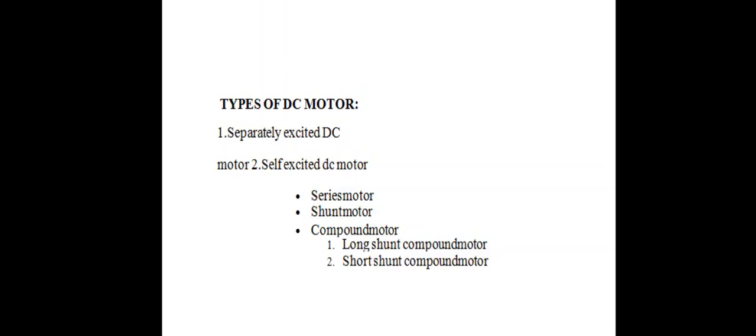Types of DC motors: separately excited DC motor and self-excited DC motor. Self-excited DC motors are classified into 3 types: series motor, shunt motor, and compound motor. Compound motor is again classified into 2 types: long shunt compound motor and short shunt compound motor.